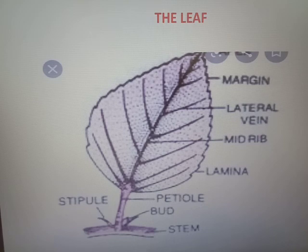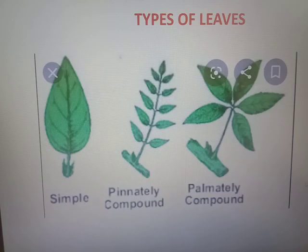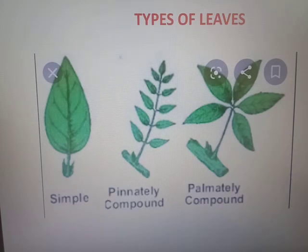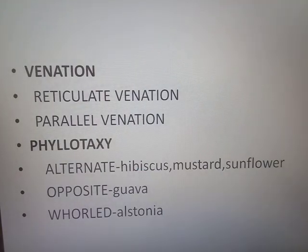The leaf has the following structures: stipule, petiole, leaf base, etc. On the basis of leaves, the types of leaves are simple leaf or compound leaf. Compound leaves are again classified into pinnately compound leaf and the palmately compound leaf.